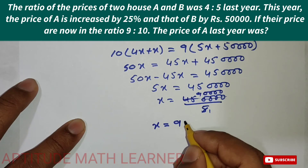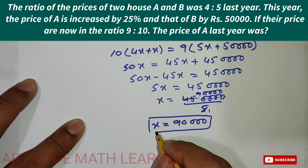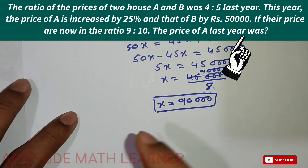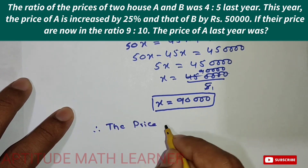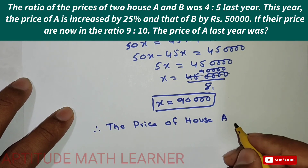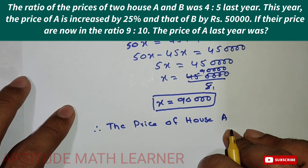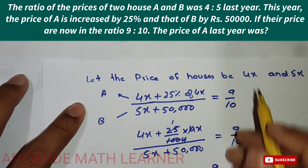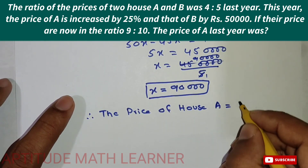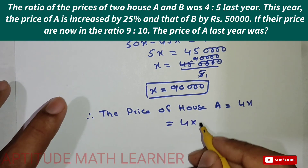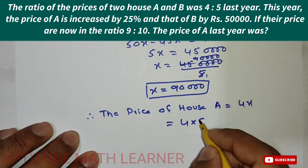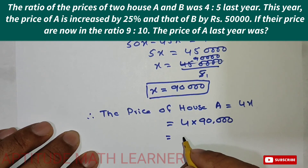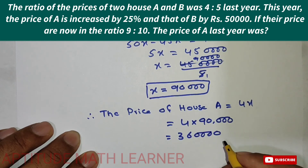The value of X is 90,000. Now, the last year price of house A was 4X. So the price of house A last year = 4 × 90,000 = rupees 3,60,000.